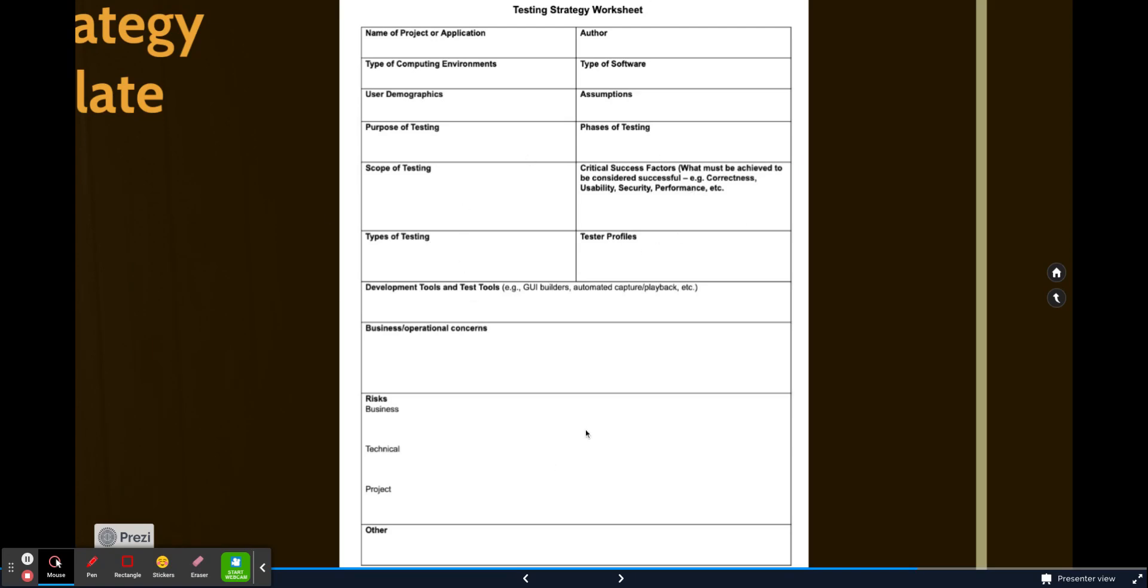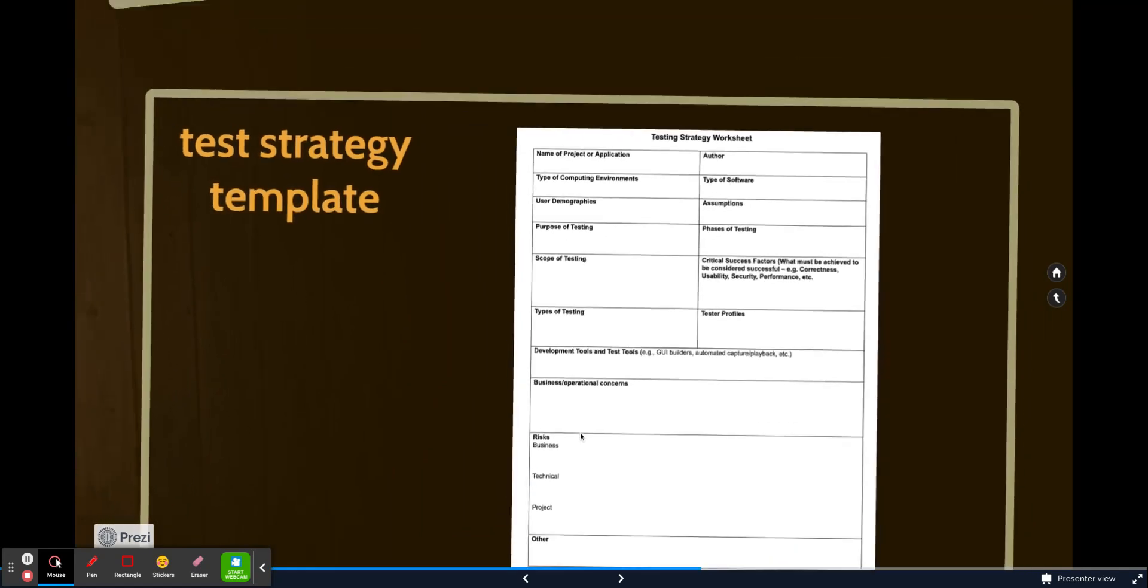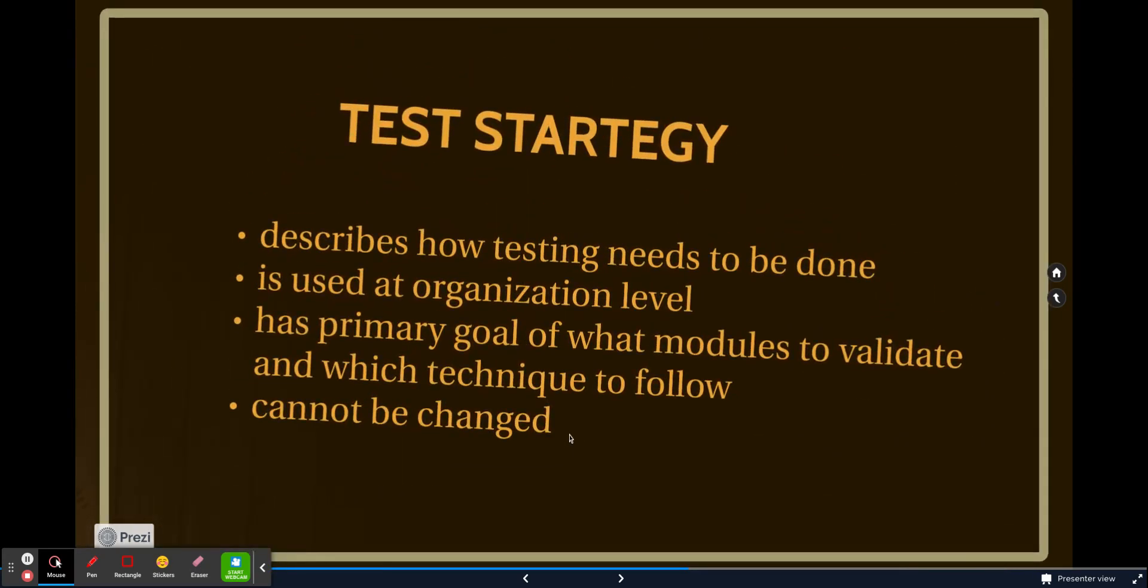So if you have a look at the pointers before that I just showed you in the test strategy, it says it is used at an organization level and it describes how testing needs to be done. So basically, you have to understand that test strategy discusses the parameters of QA at the organization level, that how many testers will be needed, what hours will be needed, what types of testing will be done, how many hardwares or how many laptops and mobiles will be used. So this is what basically test strategy is all about.